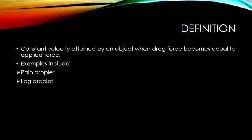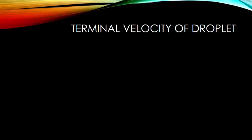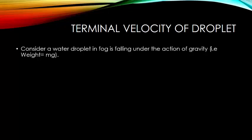A similar example is a fog droplet, often seen as stationary or very slowly falling in the air. It falls with a constant velocity because the drag force equals the gravitational force, and thus we say the fog droplet moves with terminal velocity. So let's calculate the terminal velocity of this fog droplet.